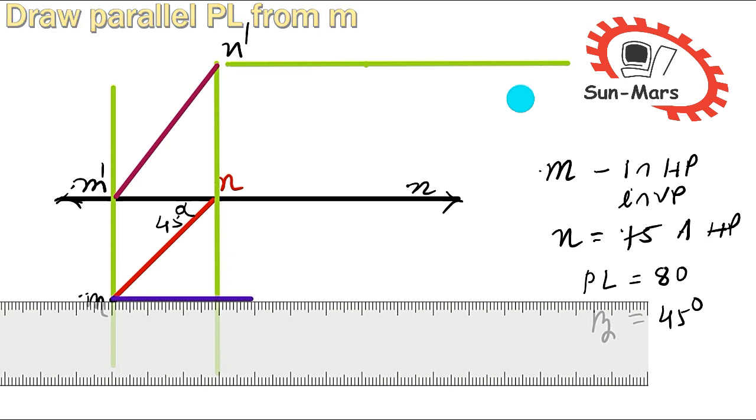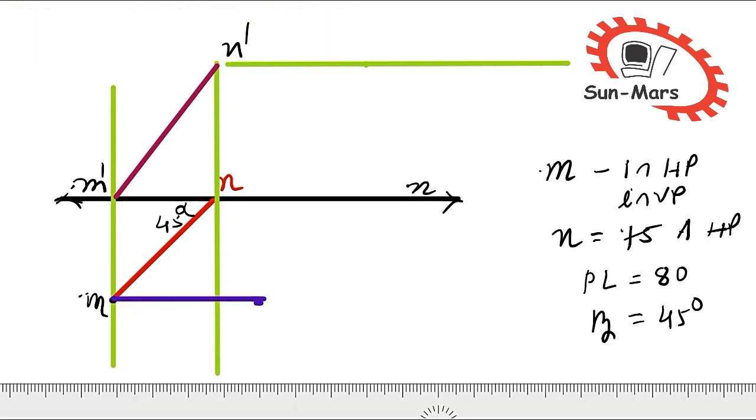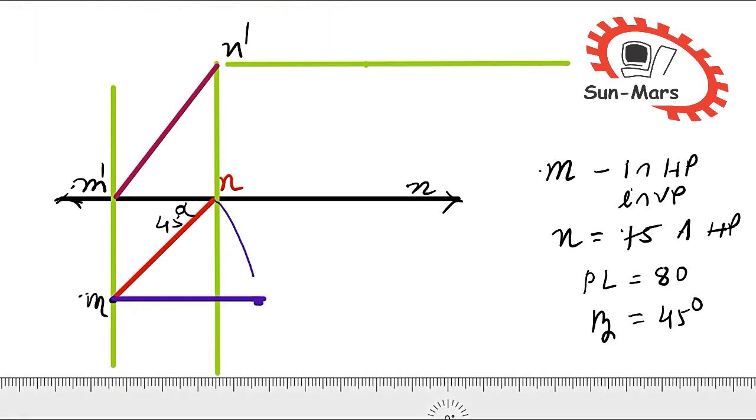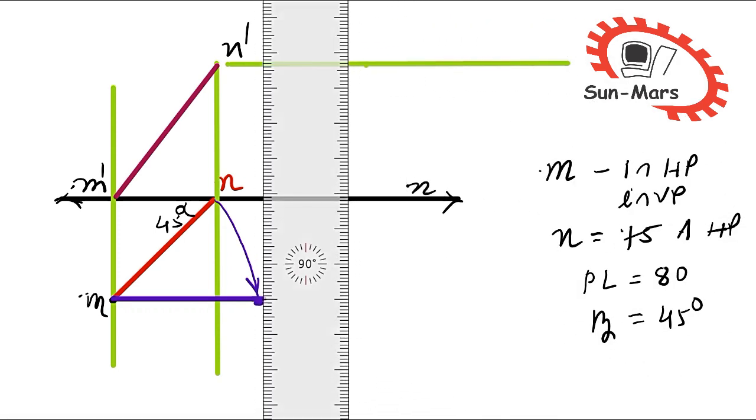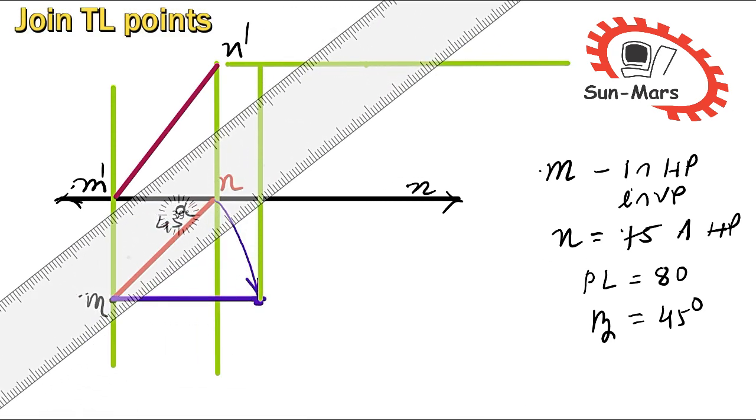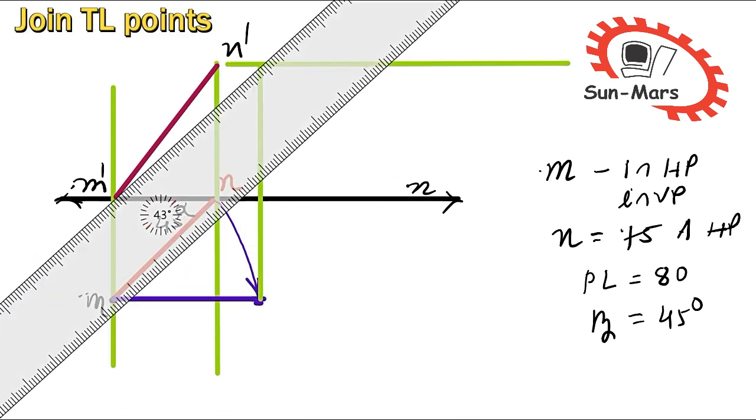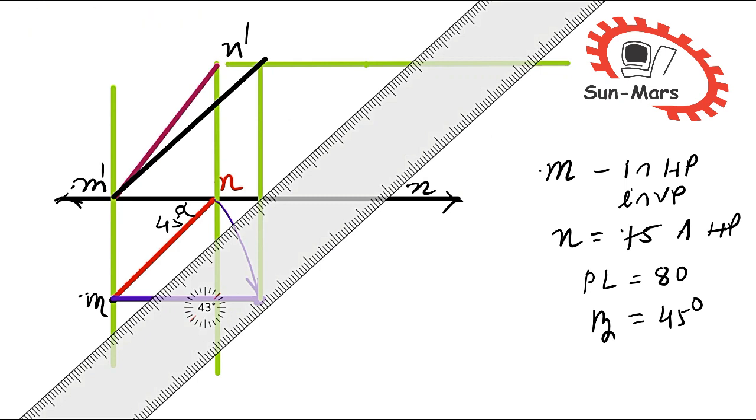Now friends, one of the two views we have to make parallel. This is parallel plan. Now friends, from here we have to make an arc like this. After that, this vertical line will come up. This particular line we will get, that is equal to true length. This will be M dash and here the line we will get is N dash TL. We will call this N dash, this is true length.